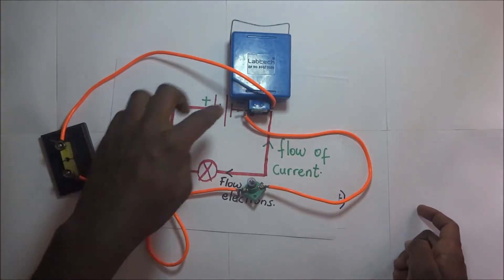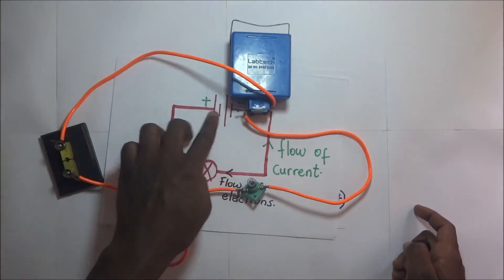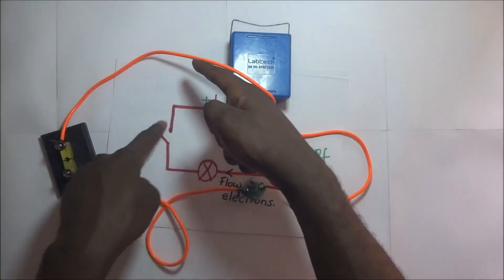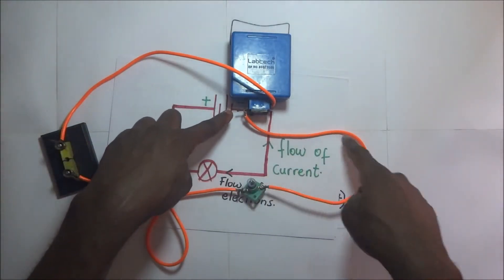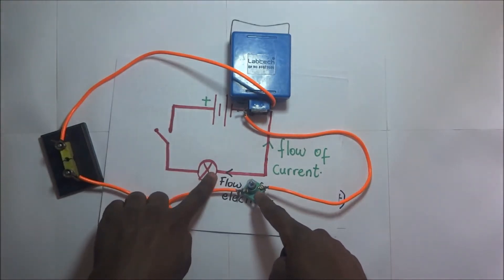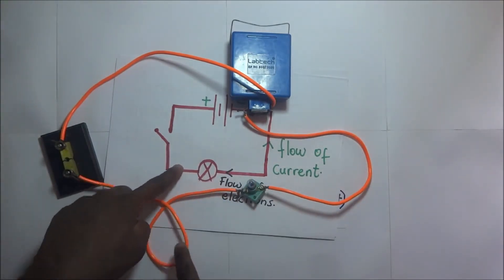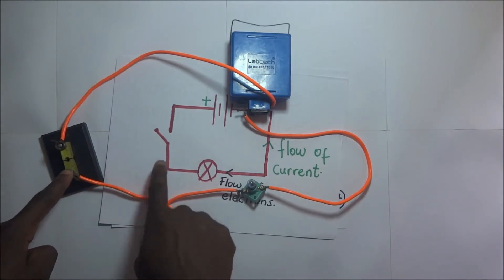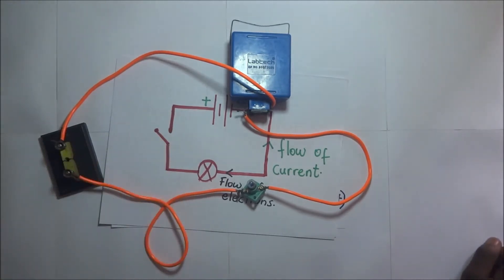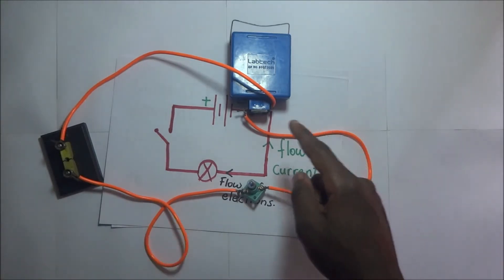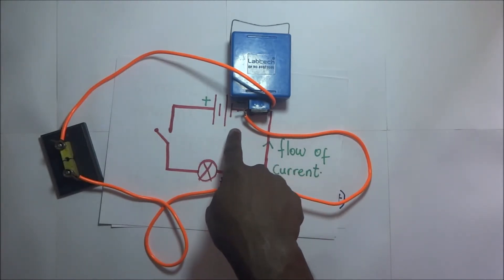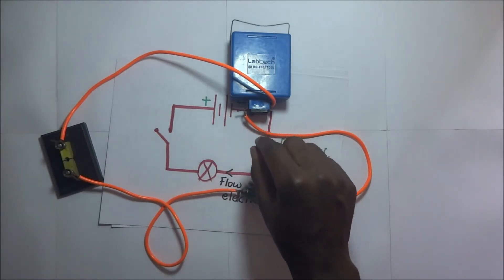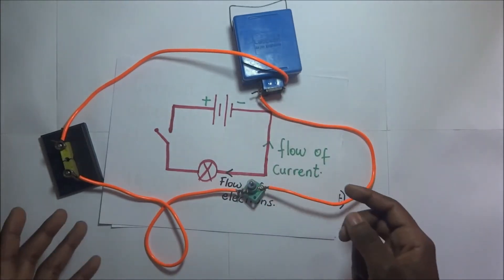Our circuit has been connected. We have our battery, with the positive terminal connected to the switch, and the negative terminal connected to this side of the bulb. The other side of the bulb is connected to the switch, completing the path. For the bulb to work — since electrons flow from the negative side to the positive side — we need to complete the circuit.